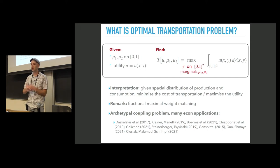The transportation problem is omnipresent in economics. It has applications to auctions, to optimal taxation, to matching markets with transferable utility. The reason it appears in all this context is because you can think of optimal transportation as a certain archetypal coupling problem. You are given two random variables with distributions mu 1 and mu 2. You are looking for a joint distribution for a coupling of these random variables that is optimal in some sense, that is maximizing a certain linear function of a certain utility.